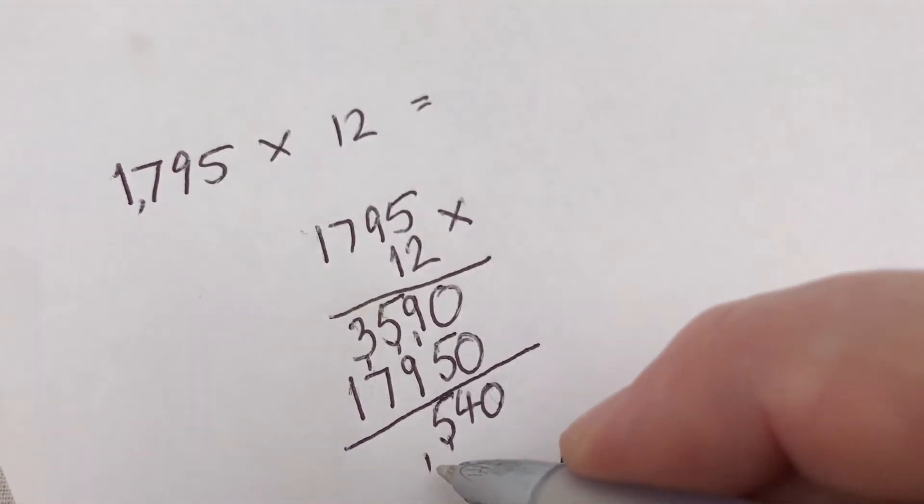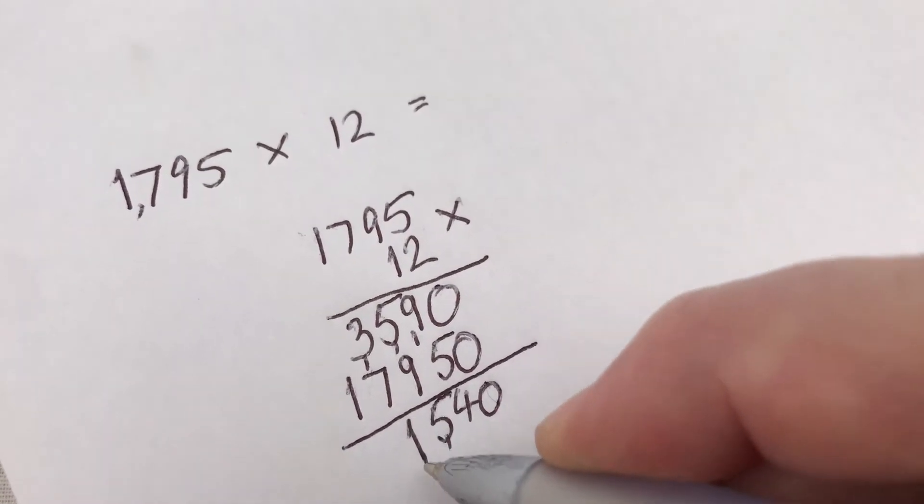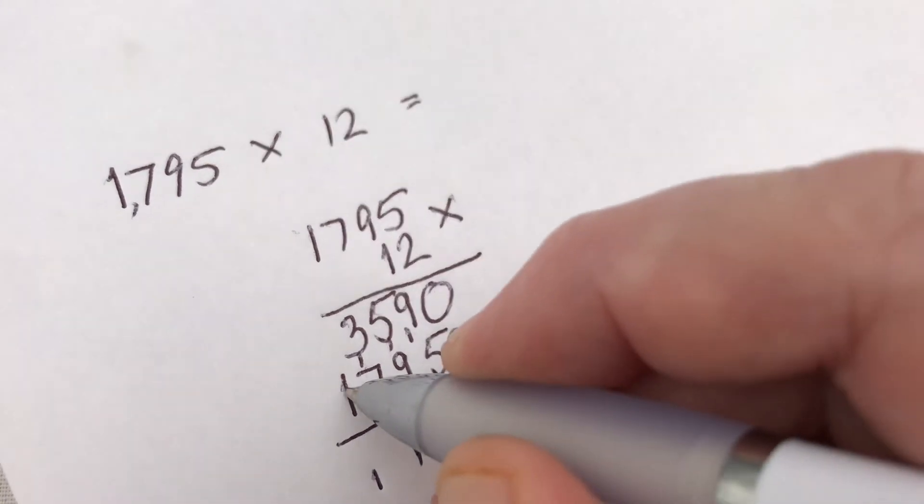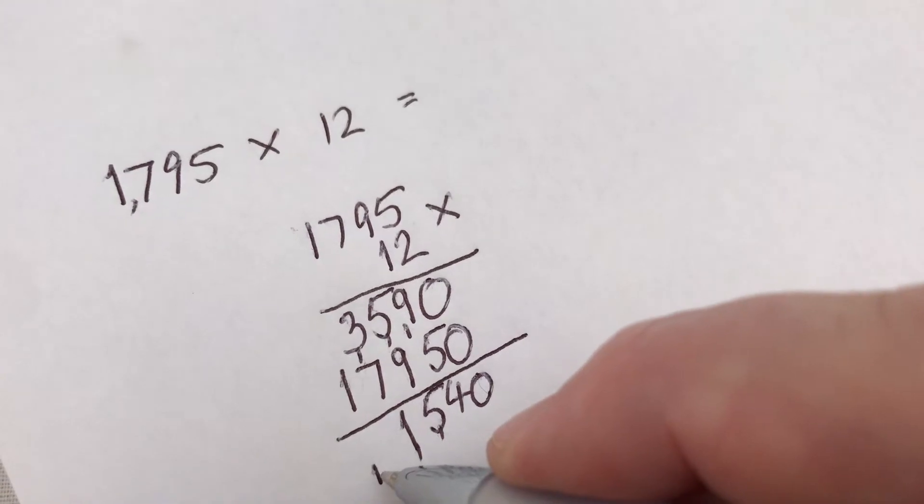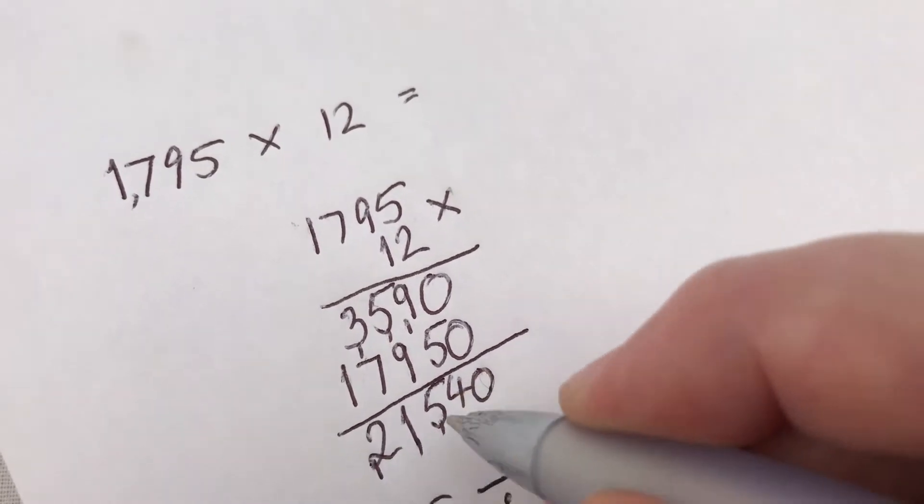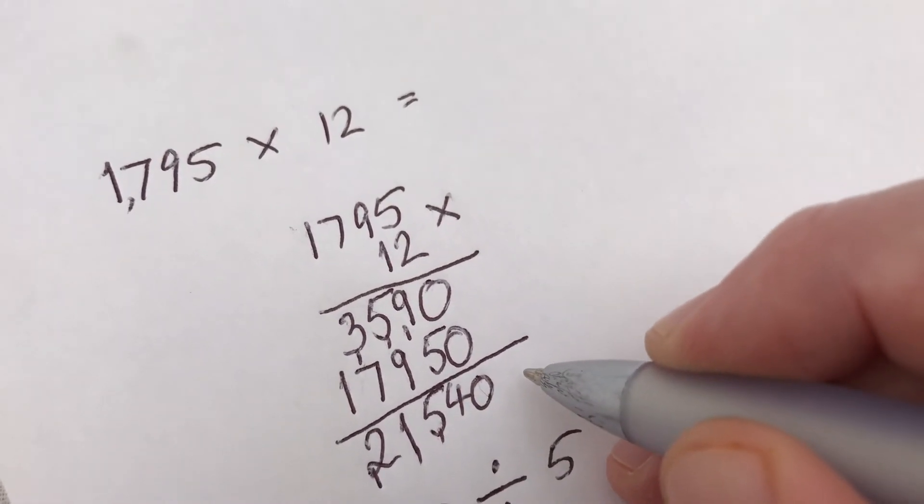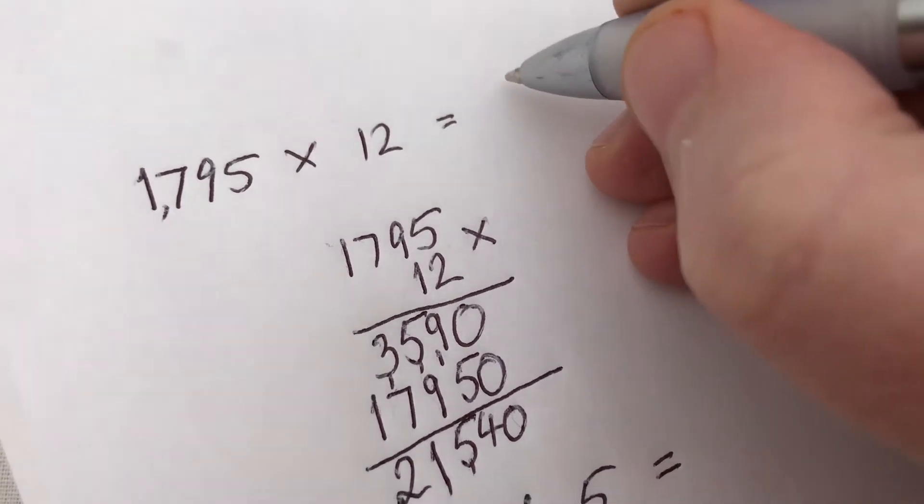3 plus 7 is 10, plus the 1 there is 11, so we put the 1 and carry the 1. 1 plus nothing is 1, but we've got the 1 carried over, so that's 2. So the answer is 21,540.